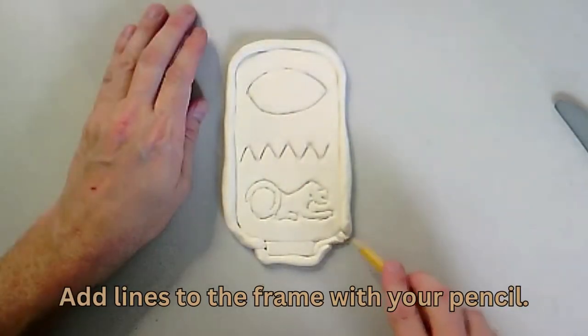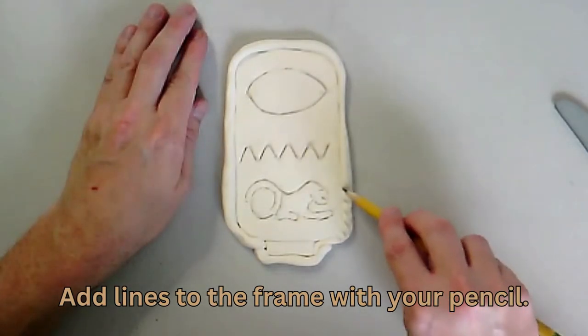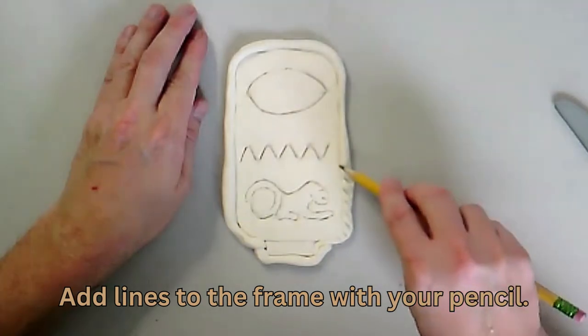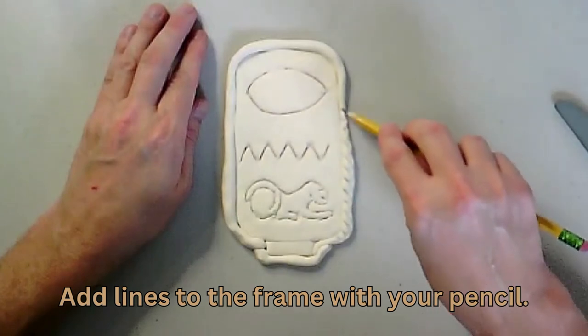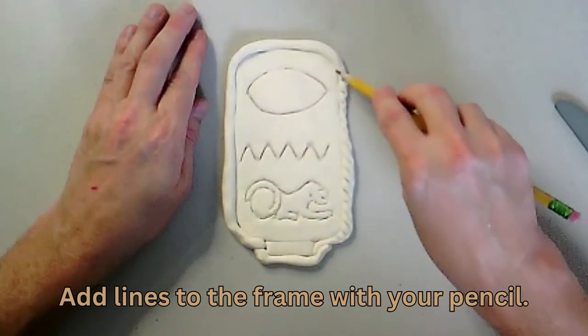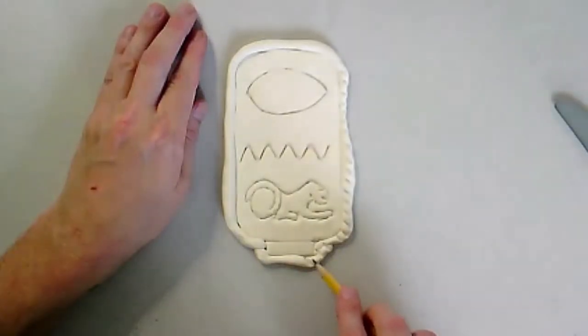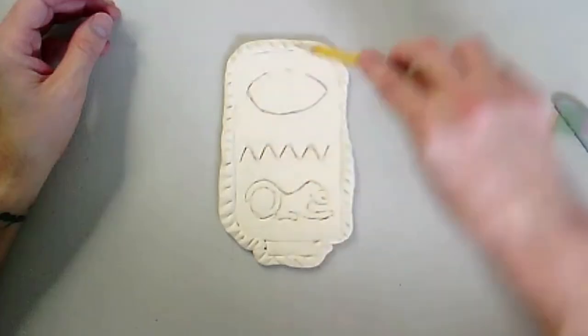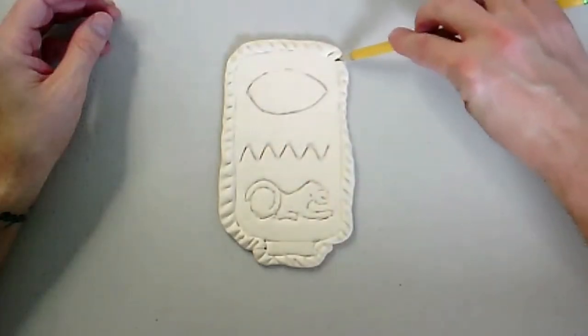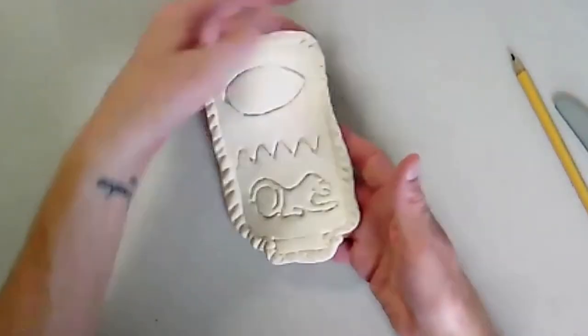Just some texture lines around the edge of our snake. You can see I'm just using my pencil and drawing hatch marks into my frame of my cartouche. Going all the way around. I'm going to keep lifting it off of my surface to make sure it's not stuck.